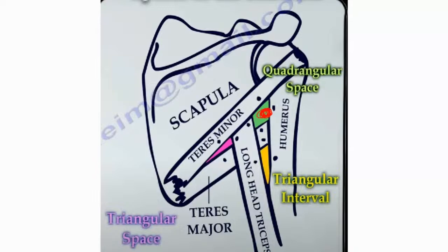Regarding the quadrangular space: if you have quadrangular space syndrome, it will affect the axillary nerve, because the axillary nerve and the posterior humeral circumflex artery pass through the quadrangular space.